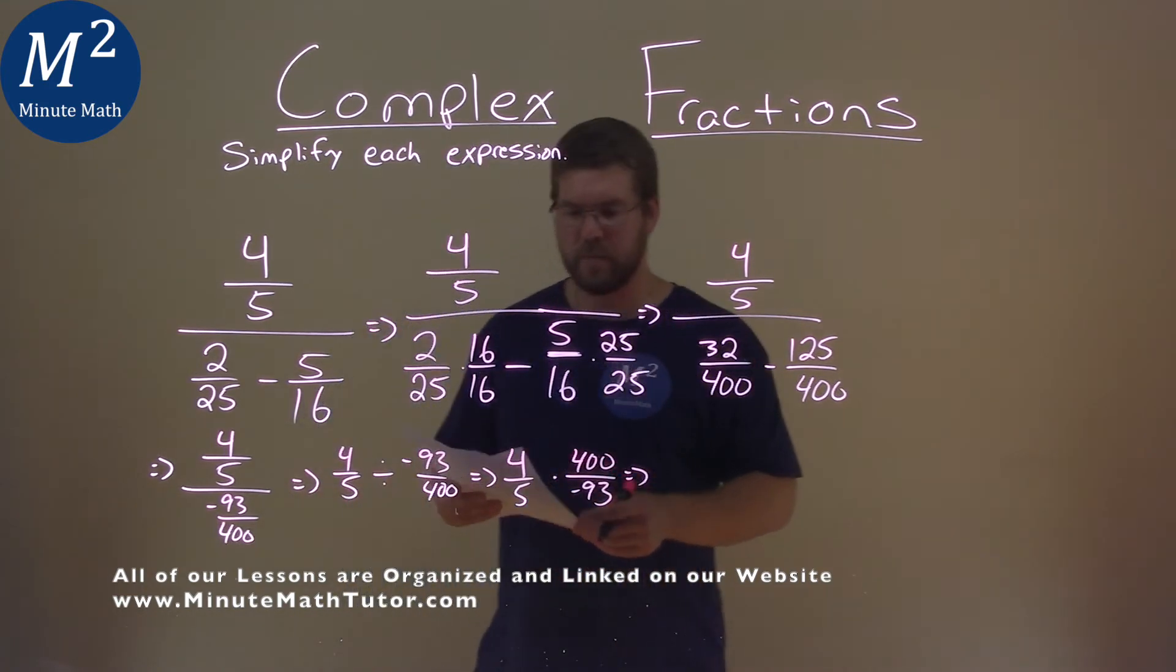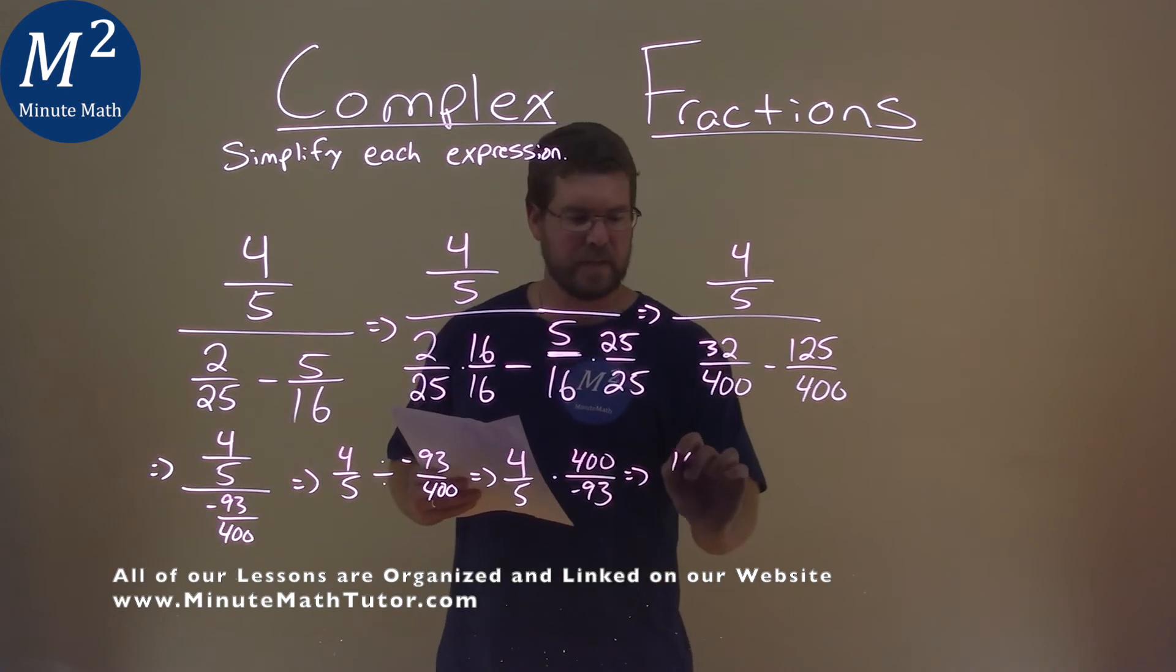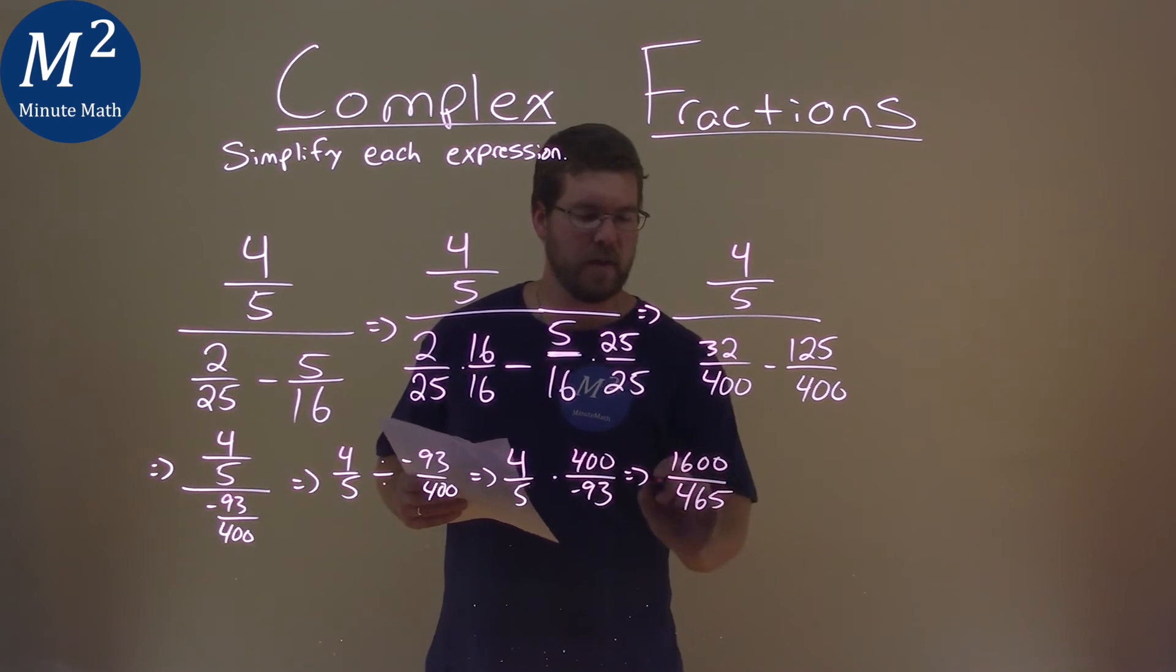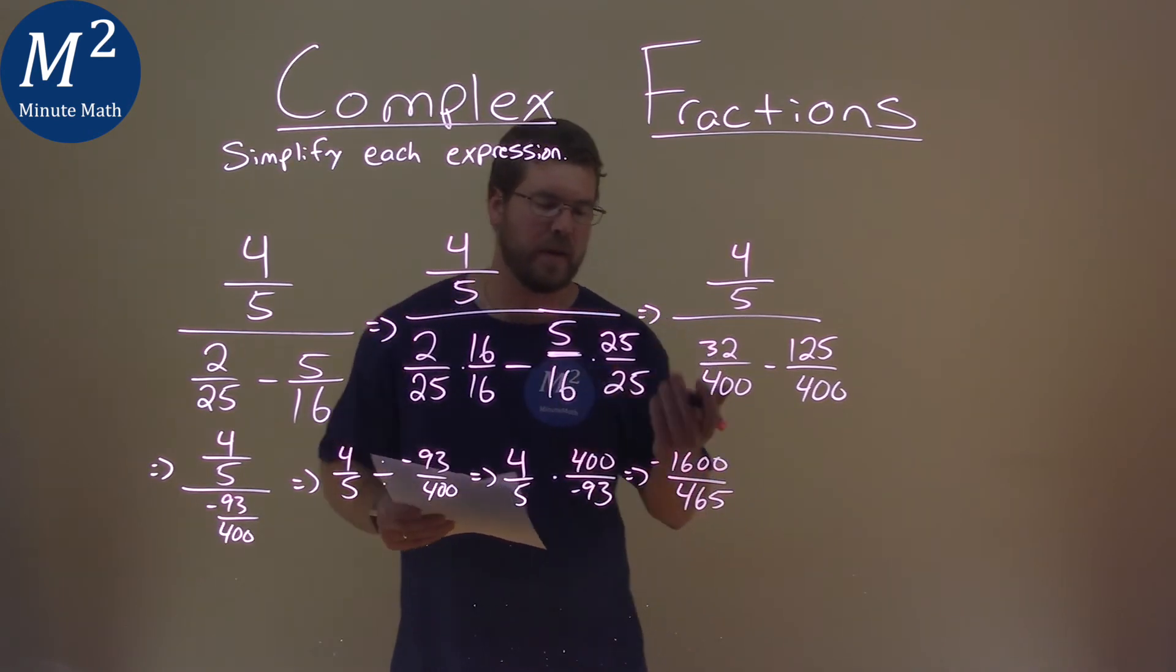Multiply that out, 4 times a 400 is a 1600, and 5 times a 93 is 465, and don't forget the negative, we can put it in the numerator now, it really doesn't matter.